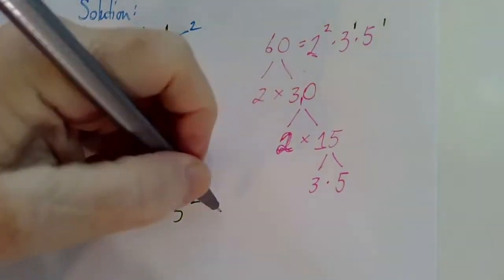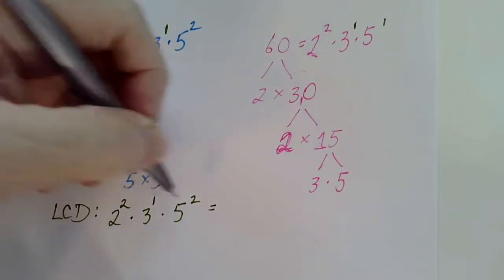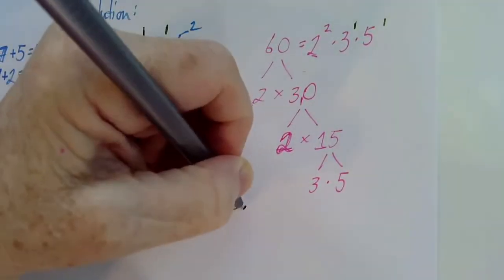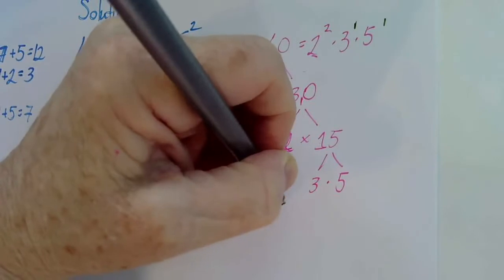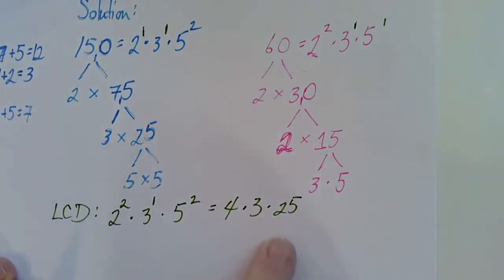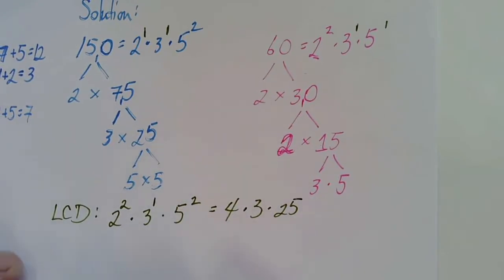Let's see what this number is. We've got two squared, that's four, times three times twenty-five. And I know twenty-five times four is one hundred. One hundred times three is three hundred.